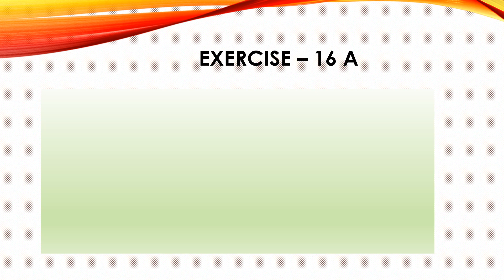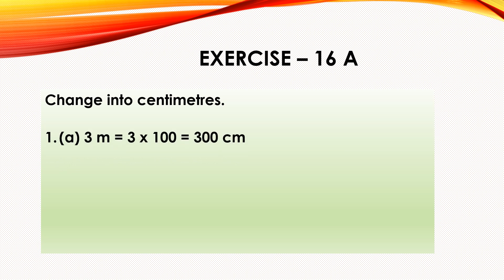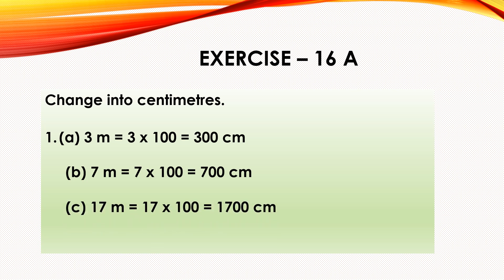Now we will do Exercise 16A given on page number 132. Let us do question one: change into centimeters. Part A — three meters to centimeters: since one meter equals one hundred centimeters, multiply three by one hundred — it becomes 300 centimeters. Part B — seven meters: seven into one hundred equals 700 centimeters. Part C — 17 meters: multiply by one hundred — it becomes 1700 centimeters. Part D — 56 meters: multiply by one hundred — it becomes 5600 centimeters.